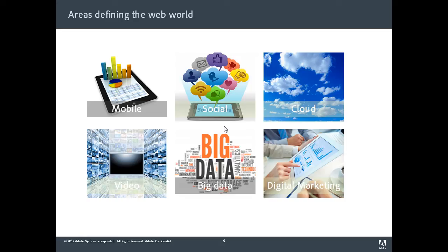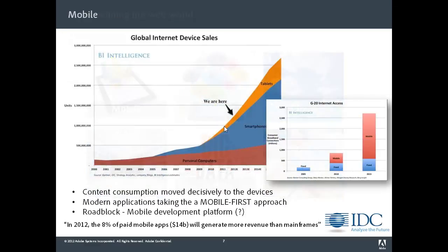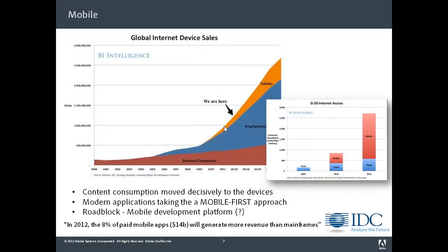This slide talks about the various numbers for smartphones versus personal computers. The number of personal computers is already outsmarted by the number of smartphones and tablets, and by 2015 the number of tablets themselves will outsmart personal computers. Content consumption has definitely moved towards mobile devices, as a result of which many web applications today are taking the mobile-first approach — building first for mobile and then porting to desktop. One of the issues we see today is the lack of an end-to-end workflow for mobile development, and that is where we envision the next version of ColdFusion.